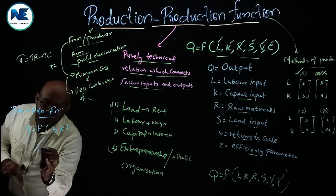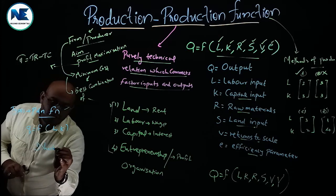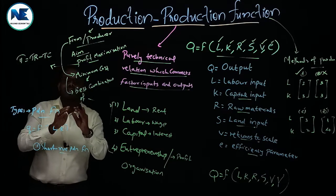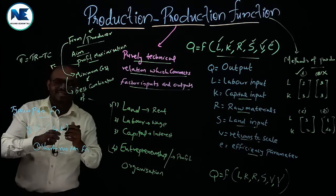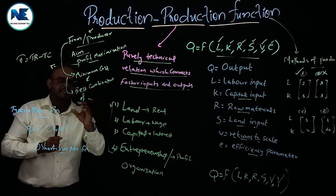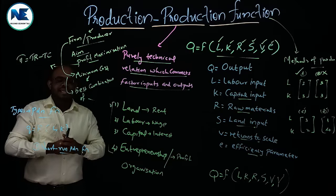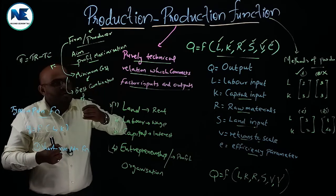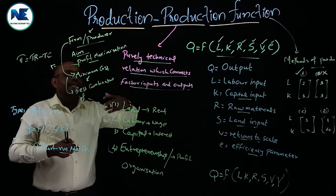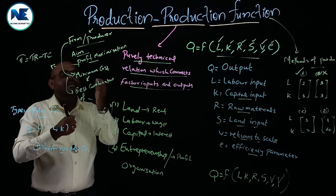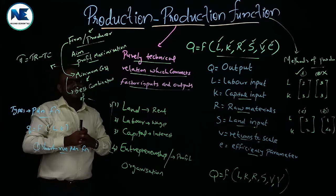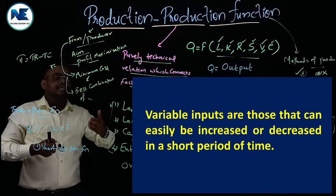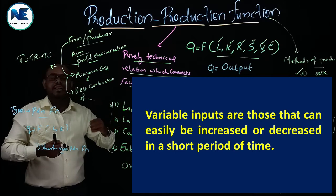Generally there are two types of production function. The first is the short-run production function, in which we consider the law of variable proportions. In the short run, the period is short, and a firm or industry can increase their output by changing only variable inputs. Variable inputs are those which may be increased or decreased by the firm to expand or contract their output.